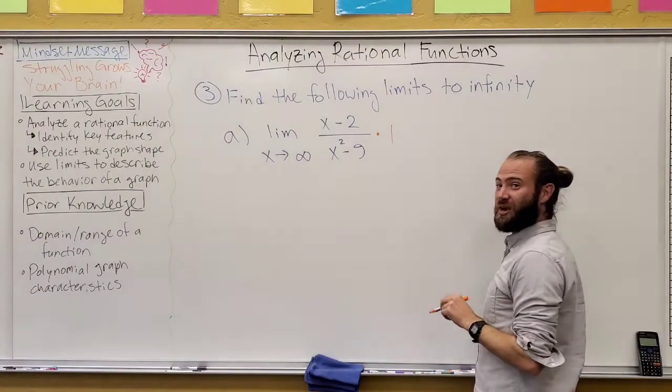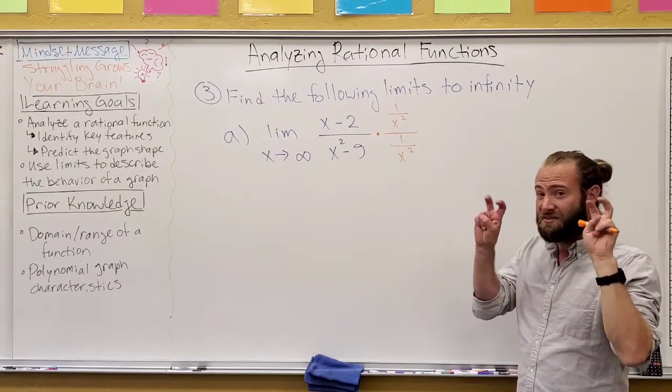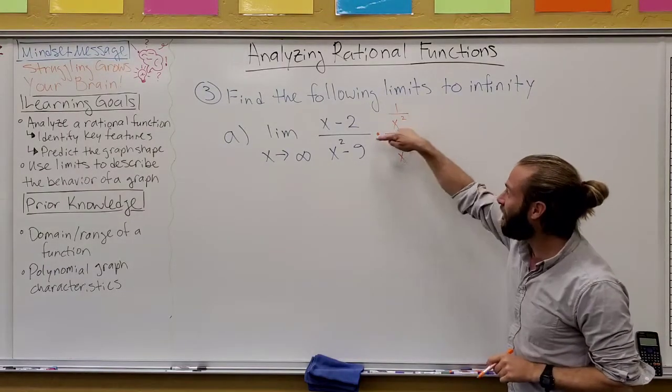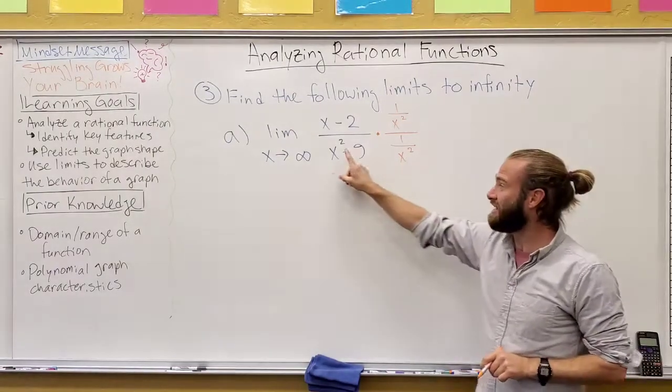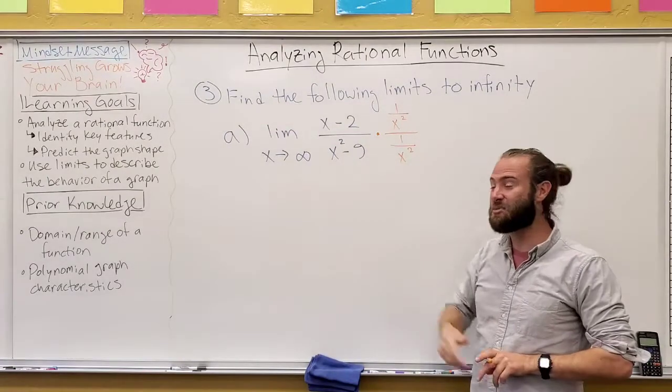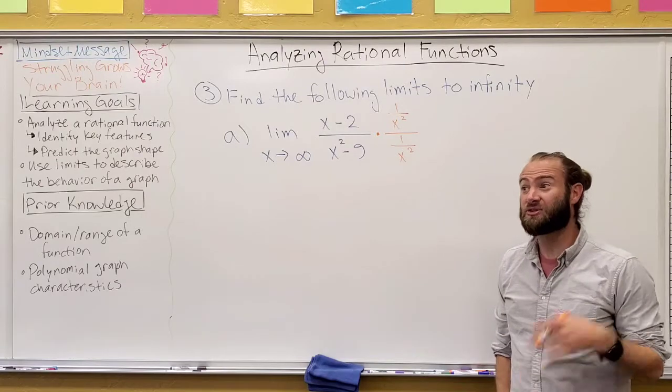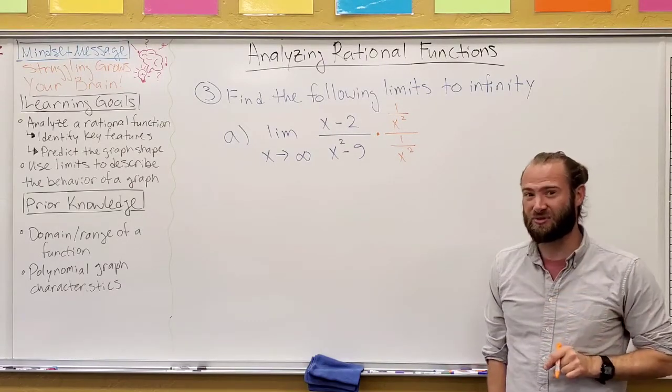But there's a very important trick we're going to use. If we look at the highest power involved in this whole entire function, that will tell us. The variation of 1 we're going to use is 1 over x squared all over himself. And I chose x squared again because he's the highest power.